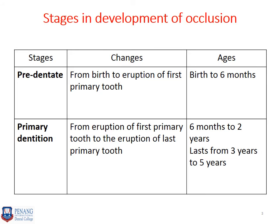We have already discussed the stages of development of occlusion. The first stage is the pre-dentate stage, covering changes from birth to eruption of the first primary tooth — that is, birth to six months. The second stage is the primary dentition, from the time the first primary tooth erupts until just before the eruption of the first permanent molar.